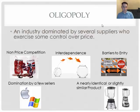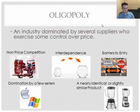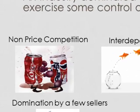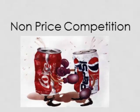Next — oligopoly: an industry dominated by several suppliers who exercise some control over price. We see this a lot. They have five characteristics. One is non-price competition. For example, Coke and Pepsi — they don't compete very often through price; they're pretty much the same price. Once in a while there's a sale on one and not the other, but for the most part their original price is the same.